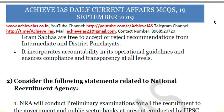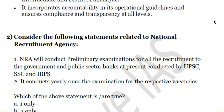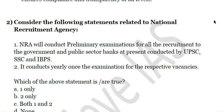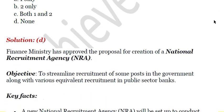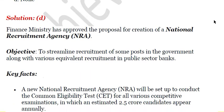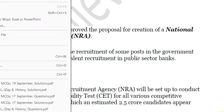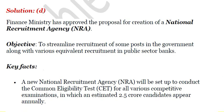Next question: consider the following statements related to the National Recruitment Agency. First, the NRA will conduct preliminary examinations for all recruitments to government and public sector banks currently conducted by UPSC, SSC, and IBPS. Second, it conducts the examination once yearly for the respective accounts. We have to choose which of the above statements is correct. Both statements are incorrect, so the answer is D. The Finance Ministry has approved the creation of the National Recruitment Agency to streamline recruitment for certain government posts and equivalent recruitment in public sector banks.